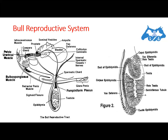Arising from the rete testis are 12 or more outgoing ducts — the vasa efferentia — which emerge from the testes and enter the epididymis. The epididymis is a single large tortuous tubule lying on the surface of the testes, whose purpose is to collect and store sperm while they undergo a ripening process. The parts of the epididymis are: the head (caput), the body (corpus), and the tail (cauda). It is in the tail of the epididymis that the majority of sperm are stored.